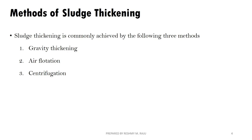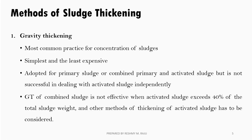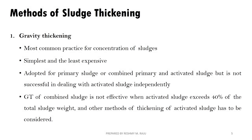Three methods of sludge thickening are used. The first one is Gravity Thickening, then Air Flotation, then Centrifugation. Gravity thickening is a very simple and inexpensive method. It works well for primary sludge as well as a combination of primary and activated sludge.